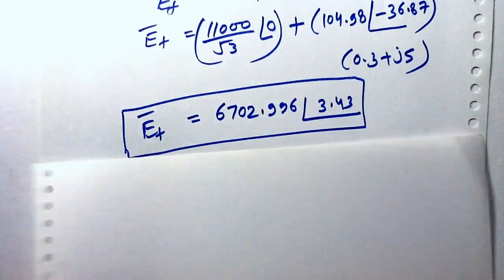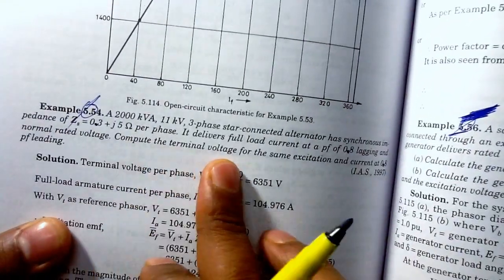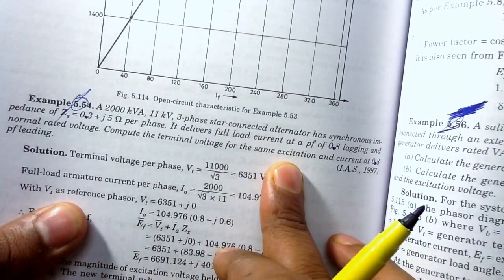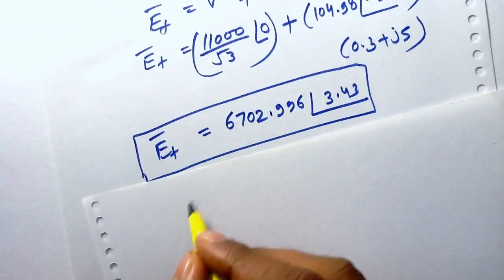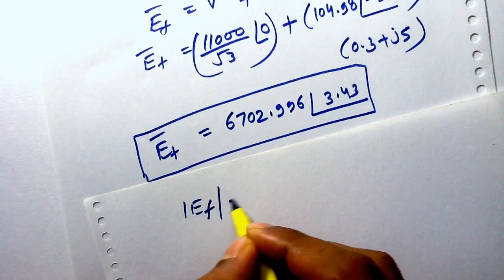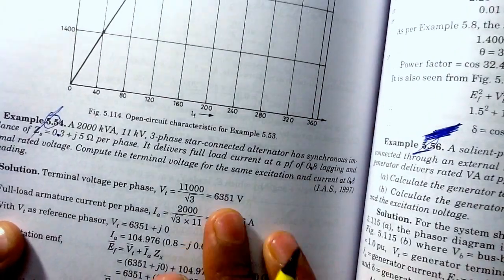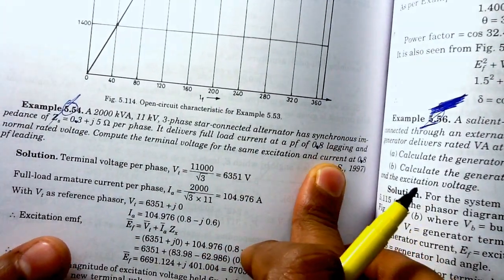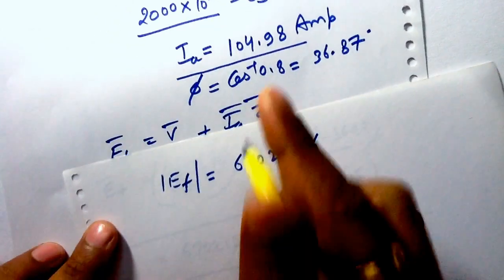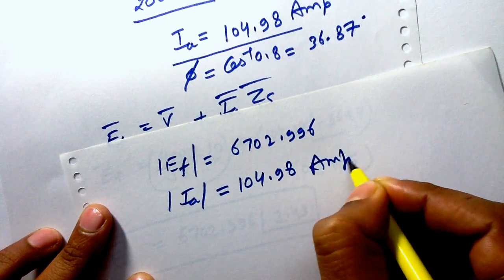For the next part, since the excitation is the same, we keep the magnitude of the EMF as 6702.996 volts. It is also stated that the current magnitude remains the same at 104.98 amperes.